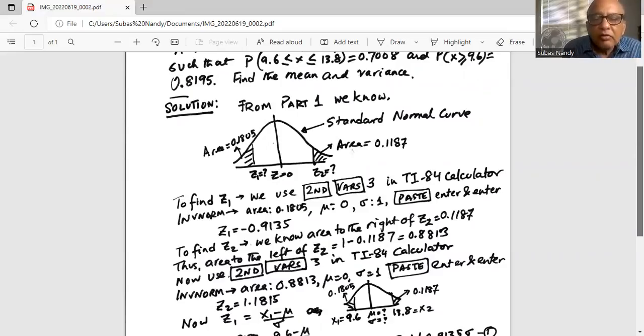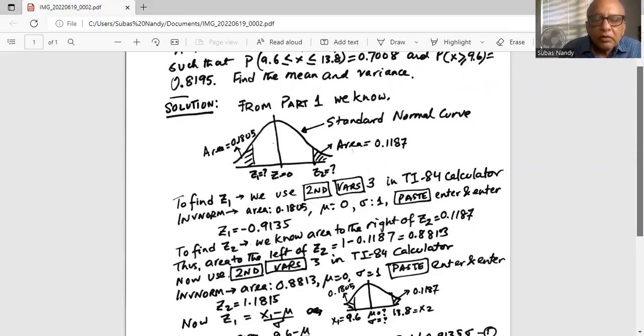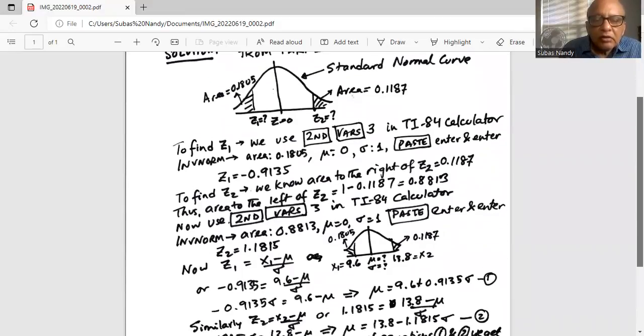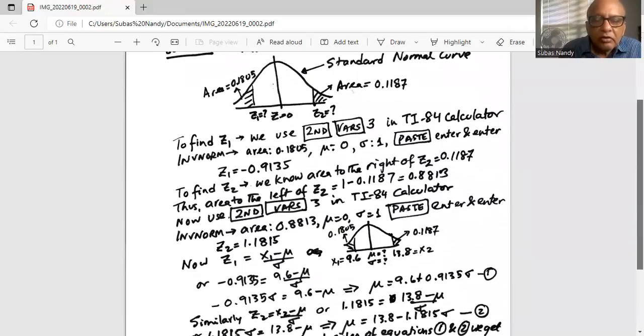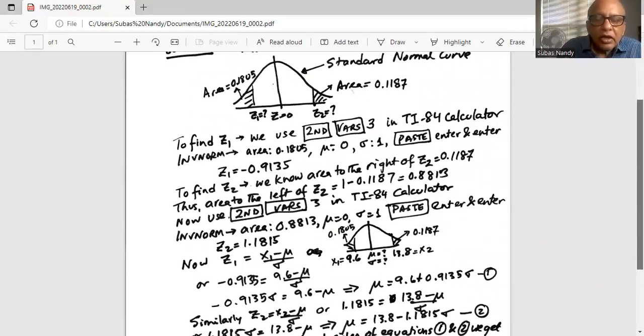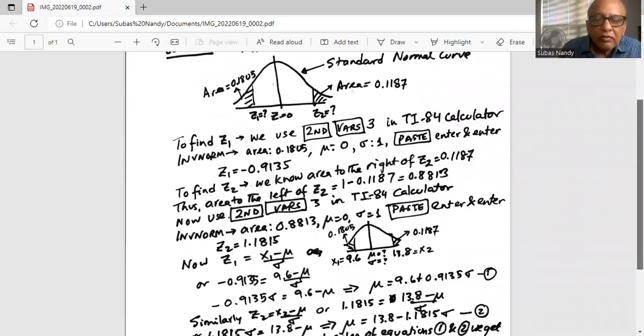This is a standard normal variable corresponding to 13.8. Now we write the equation for z1 and we know z1 is minus 0.9135 and it corresponds to the random variable 9.6 minus mu divided by sigma. We use the definition of the standard normal variable. If we simplify this equation we will get an equation for mu as 9.6 plus 0.9135 sigma.